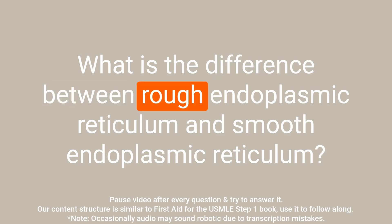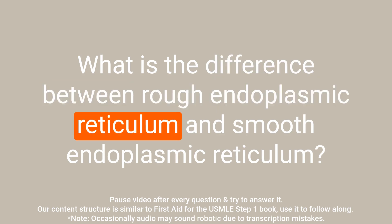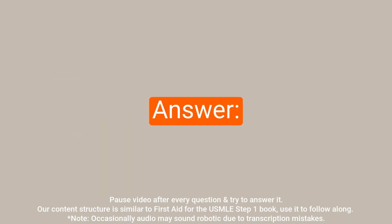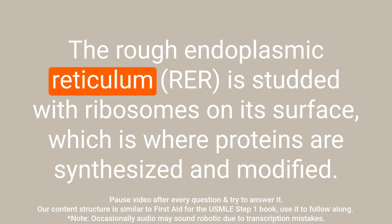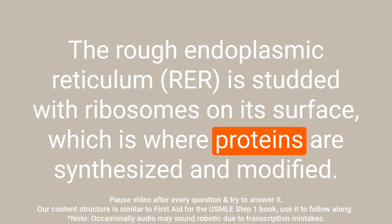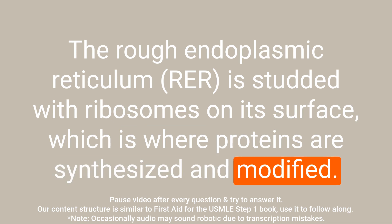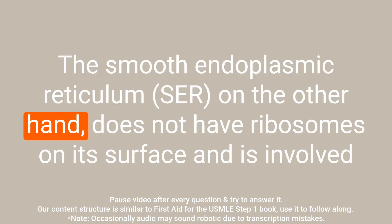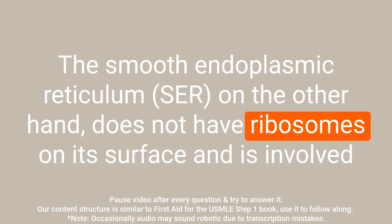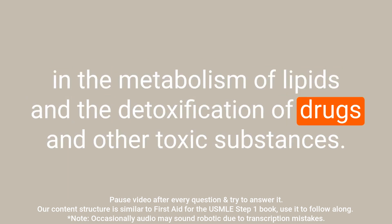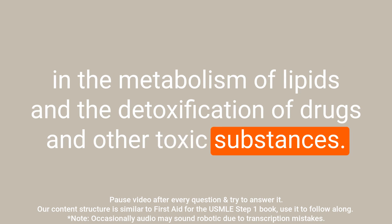Question: What is the difference between rough endoplasmic reticulum and smooth endoplasmic reticulum? Answer: The rough endoplasmic reticulum is studded with ribosomes on its surface, where proteins are synthesized and modified. The smooth endoplasmic reticulum does not have ribosomes on its surface and is involved in the metabolism of lipids and the detoxification of drugs and other toxic substances.